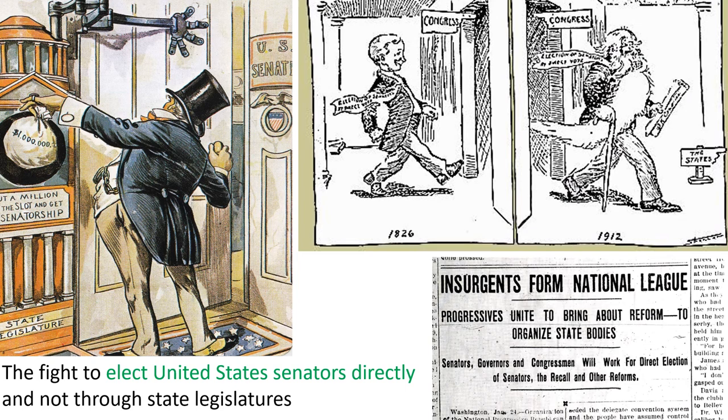One area that attracted reformers in the political realm was the direct election of senators. At this time, each state's two senators weren't elected directly by the people — voters elected congressmen, but senators were elected by state legislatures. So these senators were more susceptible to political bosses. People began saying, why don't we vote for senators directly? That would make them less likely to be bought off.